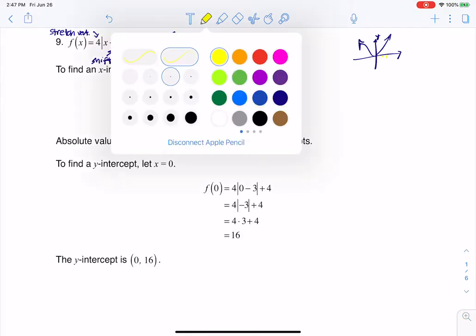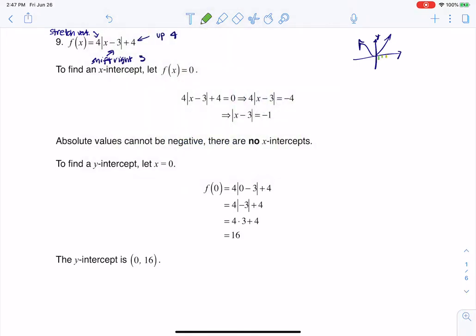Maybe that's not the best color to use. Let me go with a green so we can see it. So I'm going to go 3 units right, and I'm going to go 4 units up. And that will be my vertex instead of the origin, and it's going to be a lot skinnier because I'm vertically stretched yet.